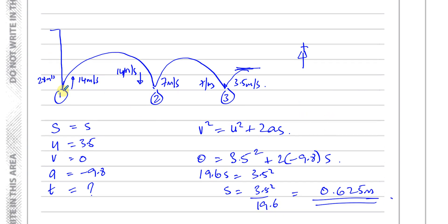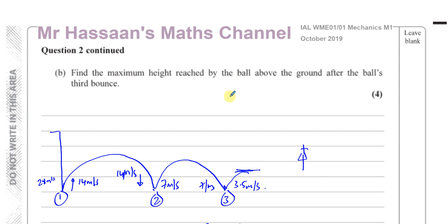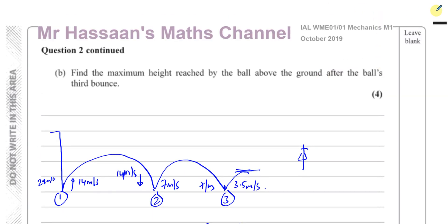The ball hits the ground at 28 m/s, speed halved to 14 m/s, halved again to 7 m/s, halved again to 3.5 m/s after the third bounce. It reaches maximum height when velocity becomes 0, giving 0.625 meters. That's the answer to question 2 from October 2019. Other questions from this paper can be found in the playlist. Thank you for watching.